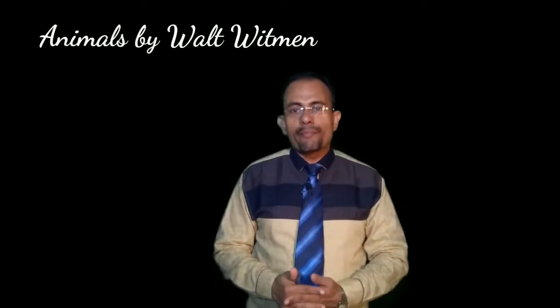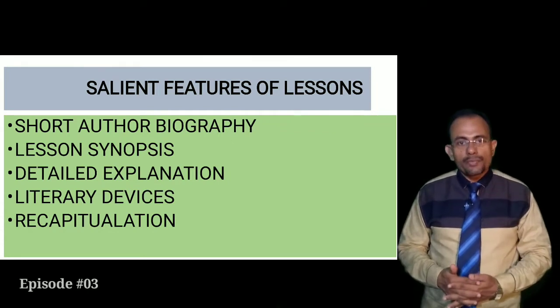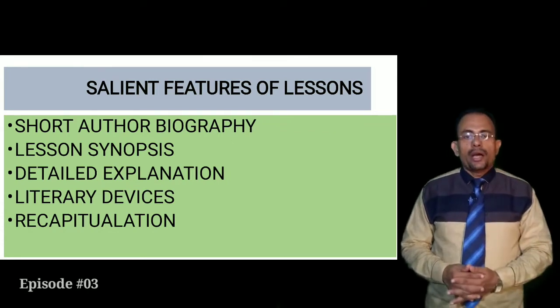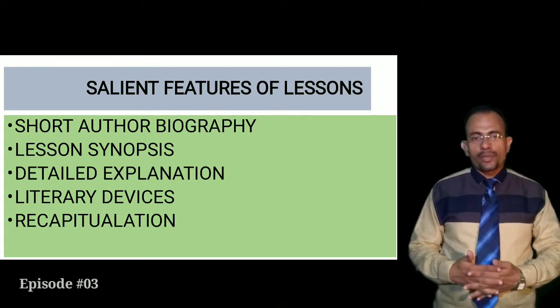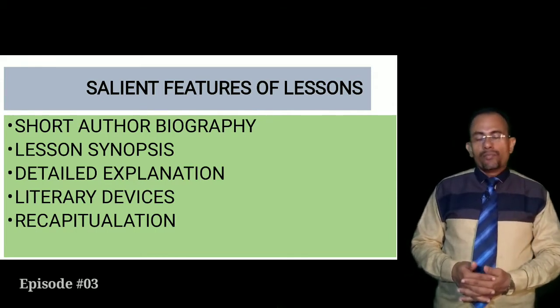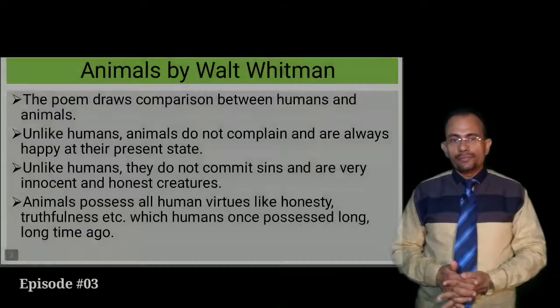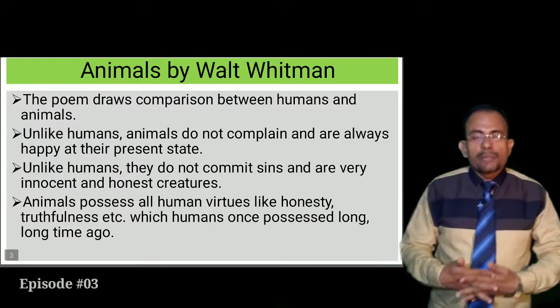Students, I'm going to explain the poem 'Animals,' which is poem number seven of your First Flight book. 'Animals' is written by Walt Whitman. Before we begin, let me highlight the saliency for the poem. First, I'll focus on a short author biography, followed by lesson synopsis, explanation of vocabulary, detailed explanation of the poem, literary devices, and towards the end, recapitulation of the poem.